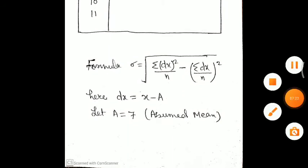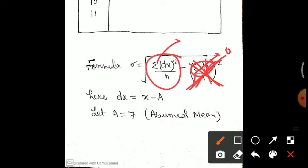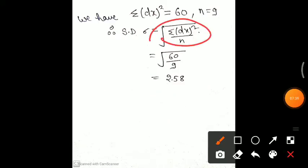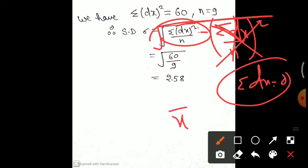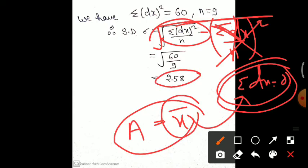Looking at the shortcut formula: if summation dx equals zero, the second term — (summation dx upon n)² — vanishes entirely, and you are left with only the first term, giving sigma equals 2.58. This is essentially the same as the direct method formula. If x̄ is used as assumed mean then summation dx is zero and we get the same answer.